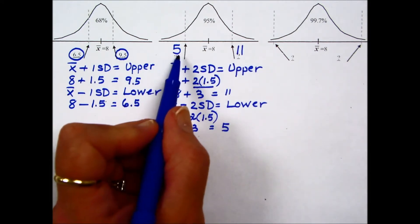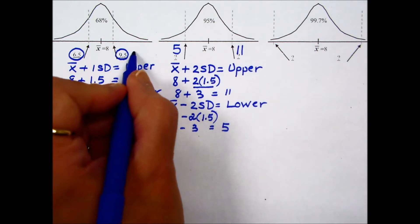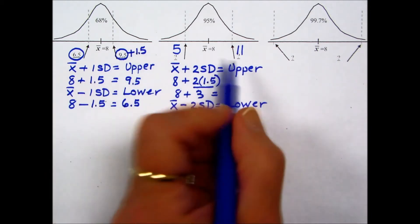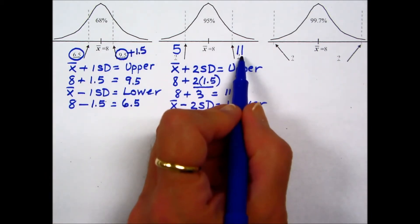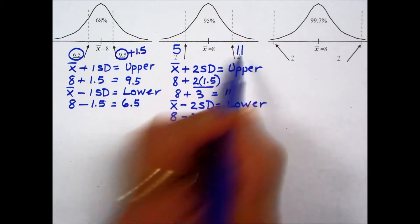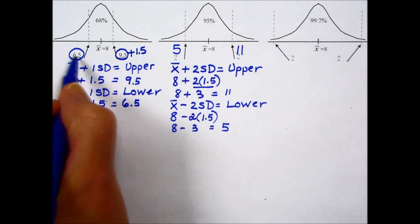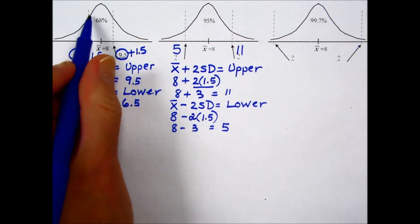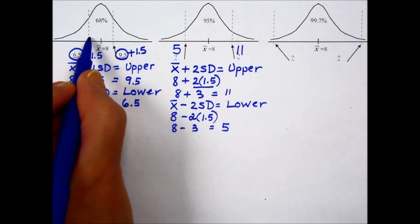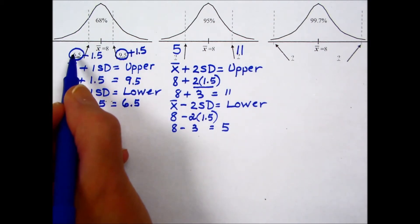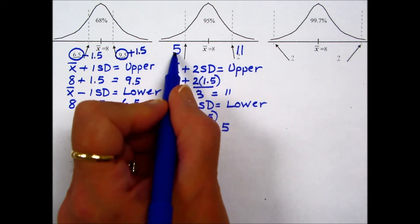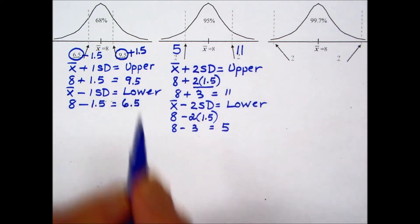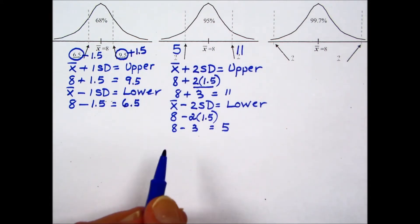We also could have found values since we had the 68% by adding one more standard deviation onto the upper. 9.5 plus 1.5 results in 11 for that next upper boundary for the 95% range. And likewise, two standard deviations below, this is 1, if I subtract 1.5, the standard deviation from our lower boundary of 68%, it brings us to that second standard deviation below the mean resulting in 5. When we are two standard deviations above and two standard deviations below the mean, it represents 95% of the values.